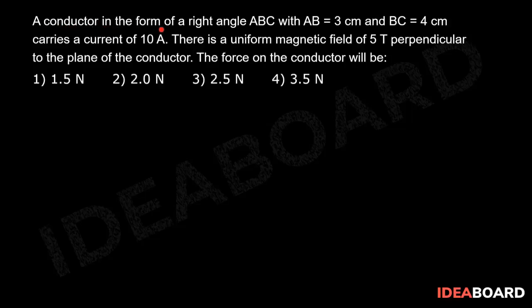A conductor in the form of a right angle ABC with AB equal to 3 cm and BC equal to 4 cm carries a current of 10 Ampere. There is a uniform magnetic field of 5 Tesla perpendicular to the plane of the conductor.